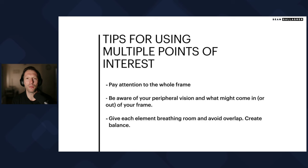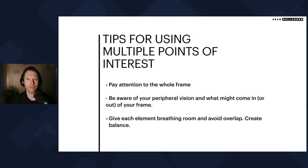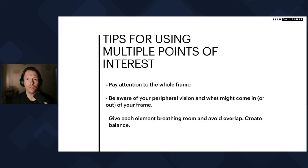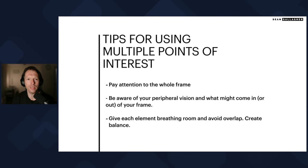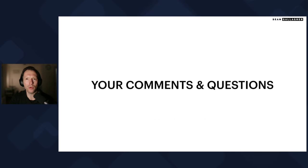Tips for using multiple points of interest: Pay attention to the whole frame — think about how different elements might fall into your frame and find that balance. Be aware of what's happening in your peripheral vision; is anything coming into your frame you might be able to use? That's even more important with the multiple points of interest technique than with two points. Lastly, give each element breathing room. It's really important to give each subject within your frame its own space so they exist in the photograph on their own at different points — and that's key to making more interesting and powerful pictures.